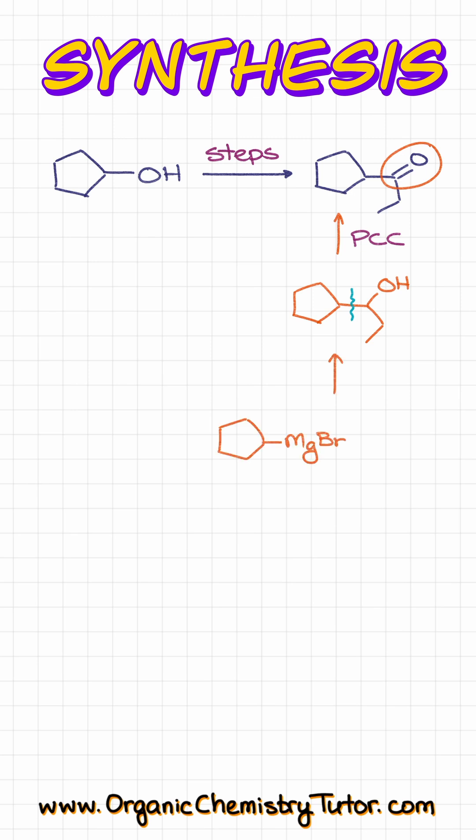In this particular case our reagents are going to be cyclopentyl magnesium bromide and an aldehyde propanal. Once we get those guys together and then do the corresponding acidic workup we are going to end up with our alcohol.